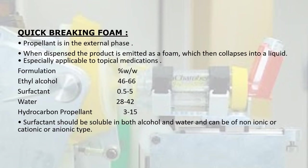Quick-breaking foam: propellant is in the external phase. When dispensed, the product is emitted as a foam which then collapses into a liquid. Especially applicable to topical medications. Formulation by weight percentage: ethyl alcohol at 46–66%, surfactant at 0.5–5%, water at 28–42%, and hydrocarbon propellant at 3–15%.